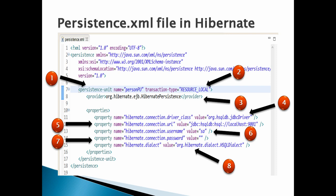Number six: in persistence.xml we have to provide the username to the HSQL database server. It takes a property named 'hibernate.connection.username' with value 'sa'. This tells Hibernate to point to the HSQL database server which has username 'sa'.